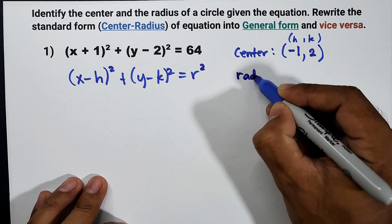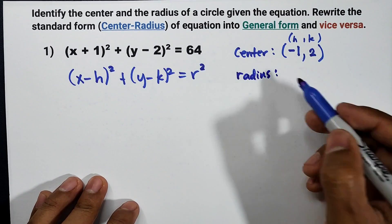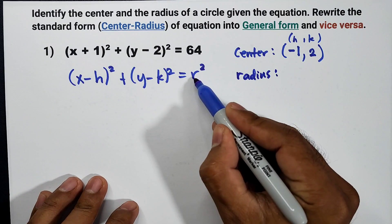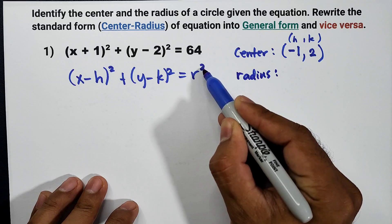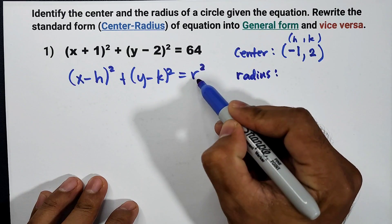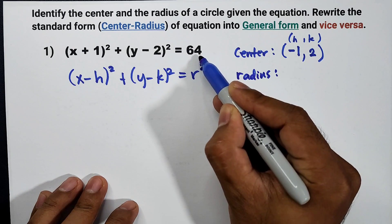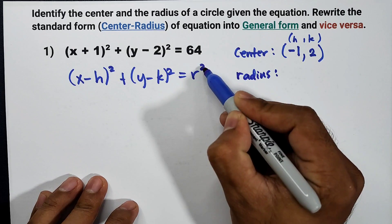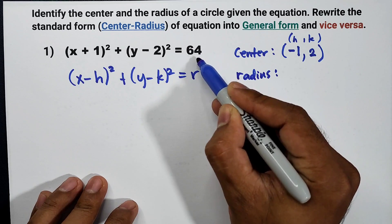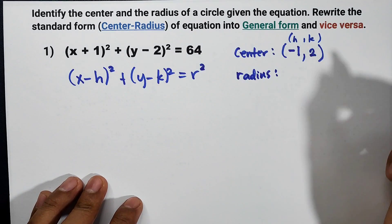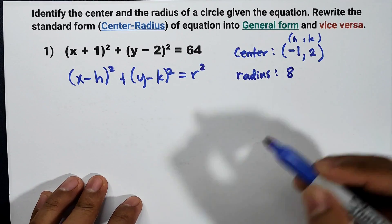The radius: r squared is equal to 64, so the square root of 64 is equal to 8. Therefore the radius is 8.